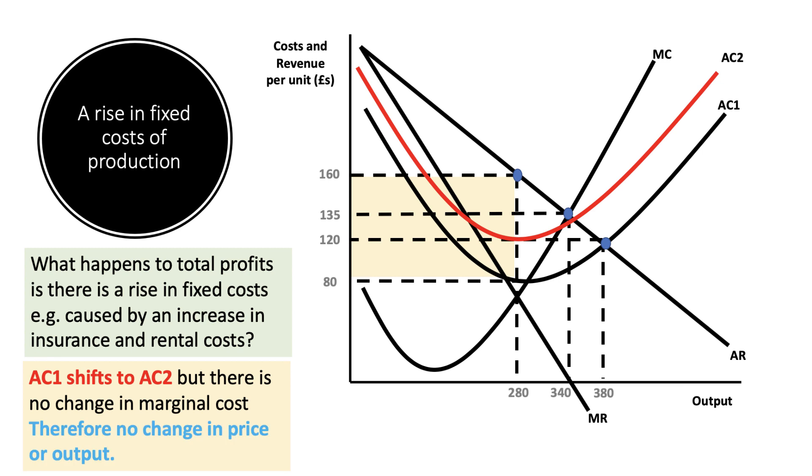That output will stay at 280. However, profits will change. The yellow area showed the original profit, but now with the higher fixed costs, I'm assuming the average cost is now £120 pounds per unit. So that orange shaded area shows the new profit after the increase in fixed cost.